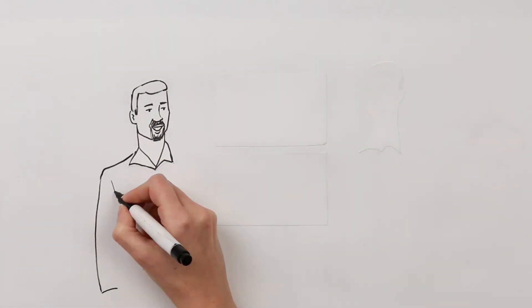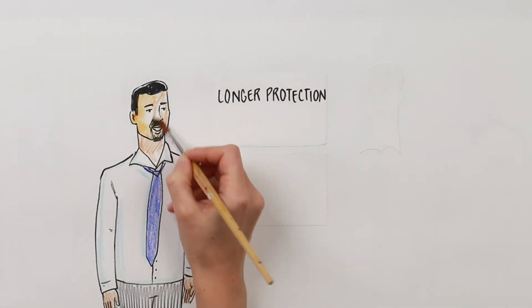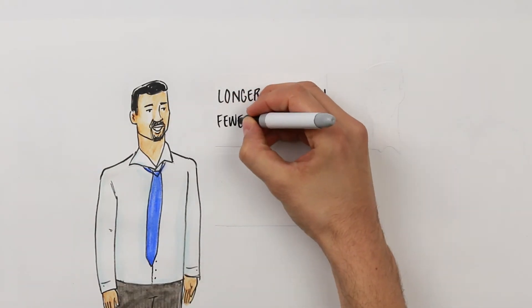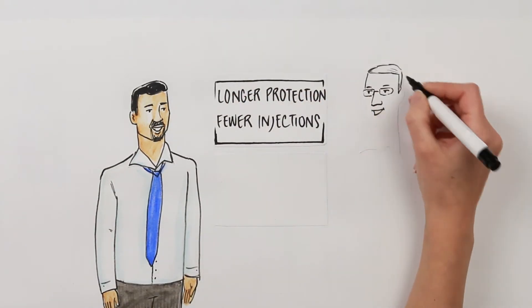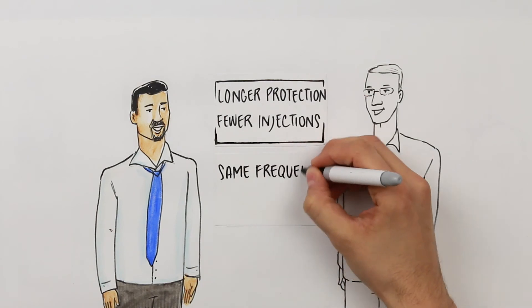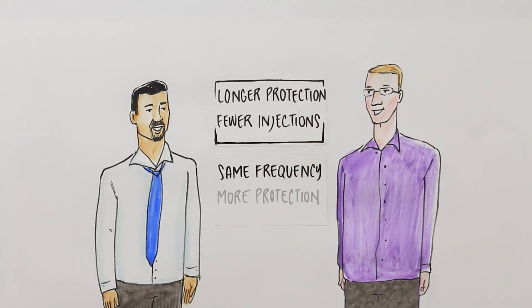For some people, this could provide longer protection from bleeding between doses of factor, meaning fewer injections. For others, it might mean treating at the same frequency but with a lower dose to give even more protection from bleeds.